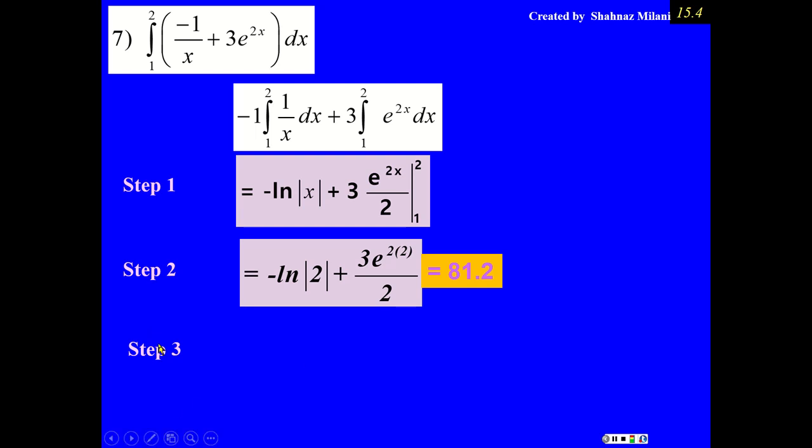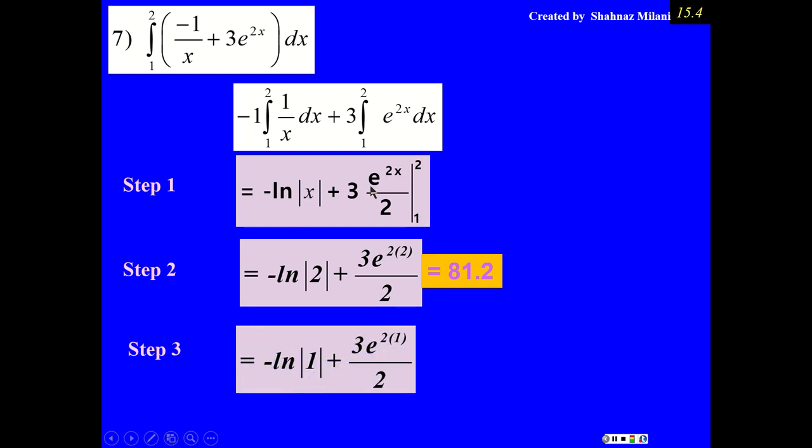Step number 3. Replace the x by the lower x value, which is 1. This x has become 1. Natural log of 1 is going to be 0. Then, 3 times e to exponent 2. That means when you plug it on the calculator, order of operation. Exponent outside, and then divide it by 2, which is my answer.